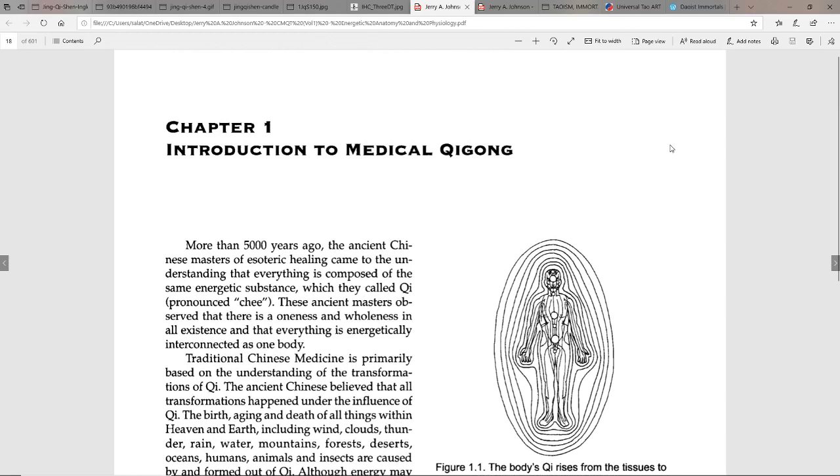As this says, more than 5,000 years ago, the ancient Chinese masters of esoteric healing came to the understanding that everything is composed of the same energetic substance which they called Qi. These ancient masters observed that there is a oneness and wholeness in all existence and that everything is energetically interconnected as one body. This flies in the face of what Western science has thought for the longest time, until we started to understand quantum theory and quantum entanglement. Now we realize they had it right the whole time.